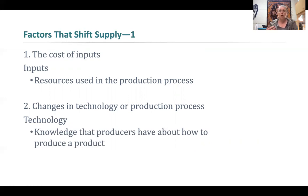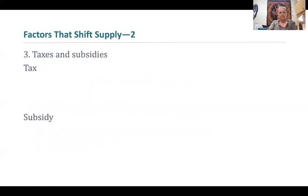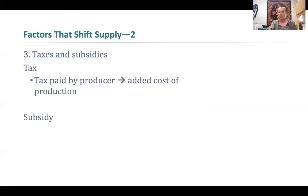Another supply factor we see frequently is a change in technology or the production process itself. These are things that improve our ability to produce the product more efficiently or at higher quality, so better technologies tend to help us supply more. The third factor, similar to the demand side, is taxes and subsidies. A tax paid by the producer is added to the cost of production — like saying input costs went up — so when there's a tax on the producer, we'll sell less of the product.